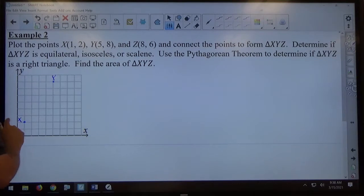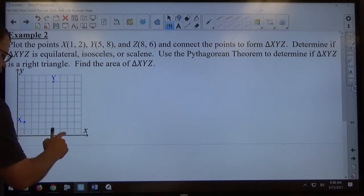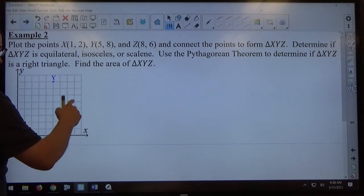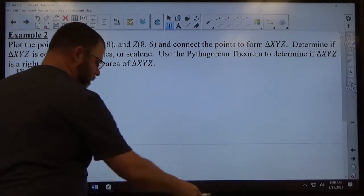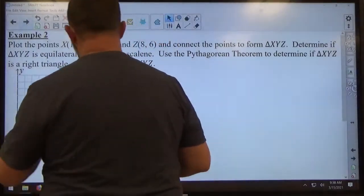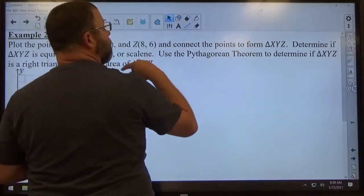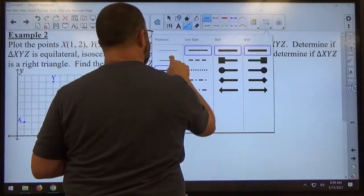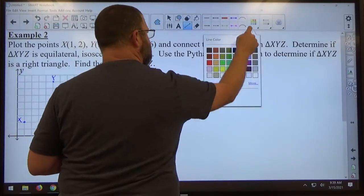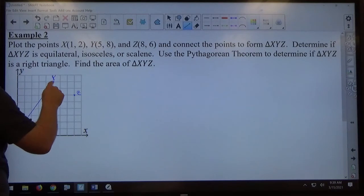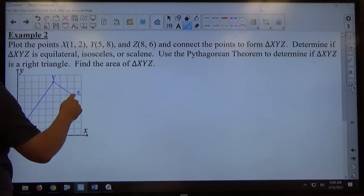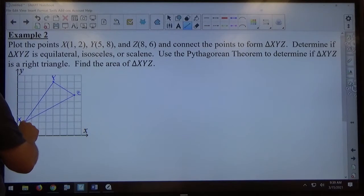And point Z is 8, 6. 1, 2, 3, 4, 5, 6, 7, 8 and 1, 2, 3, 4, 5, 6. There's point Z. So if I connect those dots with straight lines, X to Y to Z. That was job 1.